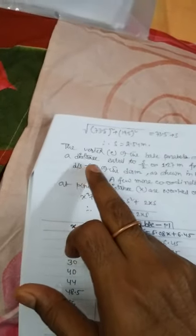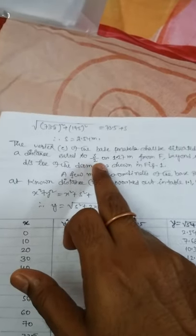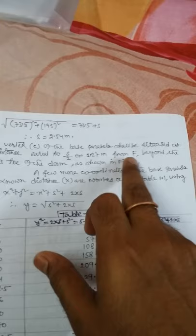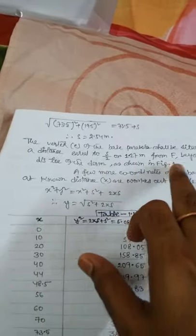The vertex C of the base parabola shall be situated at a distance equal to s by 2, or 1.27 meter from F, beyond the downstream toe of the dam, as shown in figure.